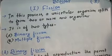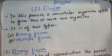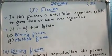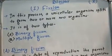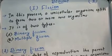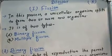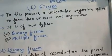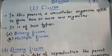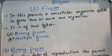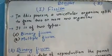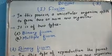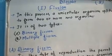Good evening students, welcome back again. This is your online bio class for class 10 students. As you know, in the previous class we had started the chapter on 'How do organisms reproduce?' — that means reproduction. We had already started reproduction and talked about types of reproduction. In that class I told you there are two types of reproduction: asexual and sexual.